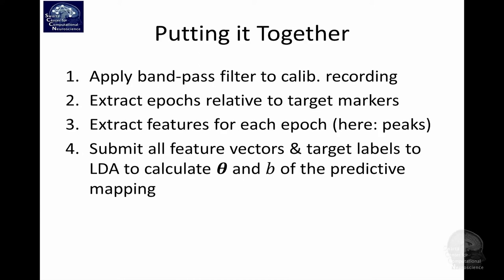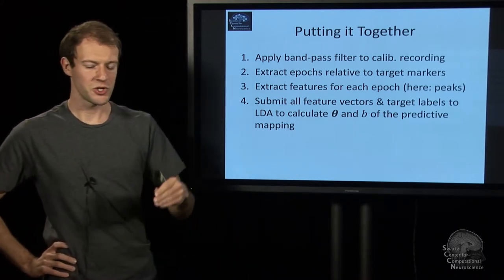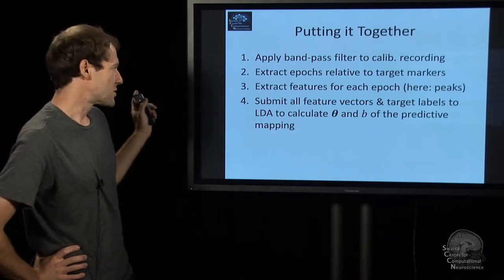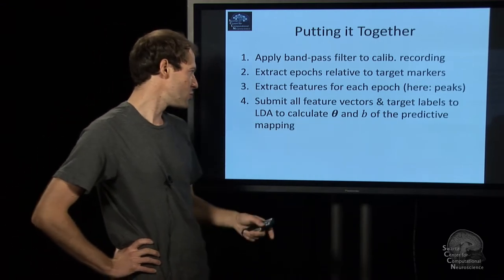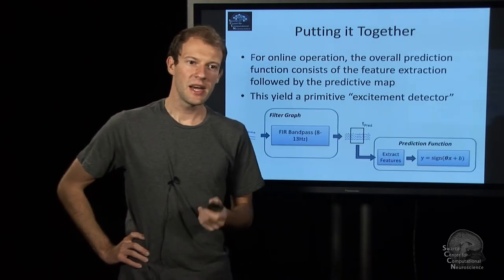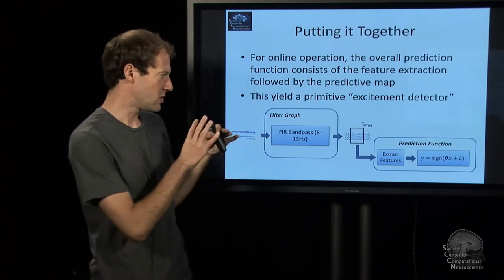Now with that stuff in place, the next step is to take all that and put it together into one complete BCI. What we will do is to train this brain computer interface, we take our original calibration recording and we band-pass filter it to get rid of drifts and things like that. Then we extract the epochs, like I said, relative to the target markers, which are the picture presentations. We extract features for each of these so-called epochs. Then we submit all the feature vectors to the LDA, get the parameters out, and that's what we stick into our final BCI structure.